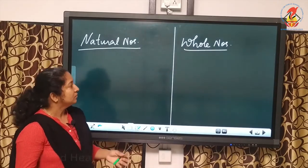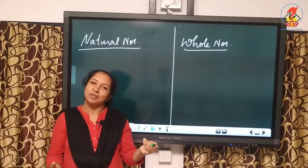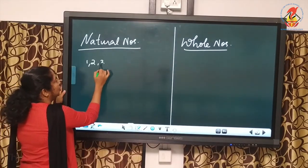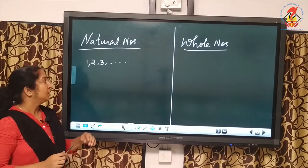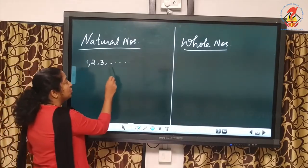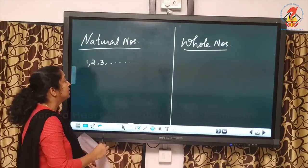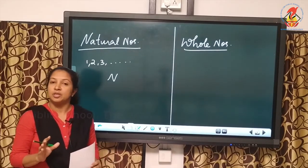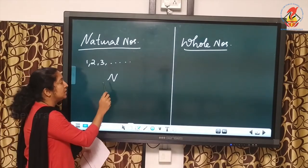In this chapter, we are dealing with different kinds of numbers. The first one is natural numbers, which you are learning from lower classes. Natural numbers are numbers which we use for counting: 1, 2, 3, etc. The collection of natural numbers is denoted by the symbol capital N.